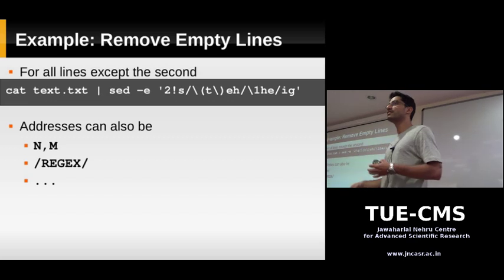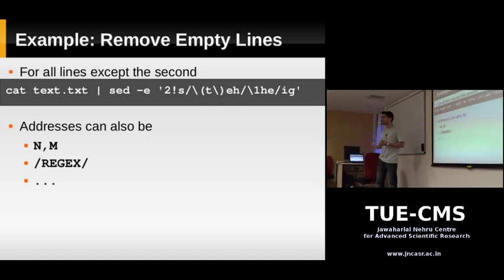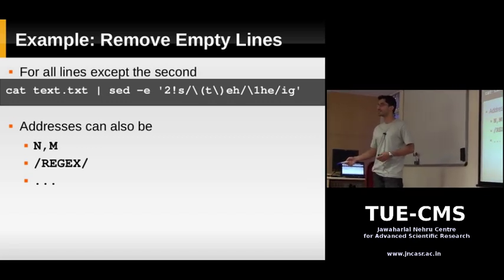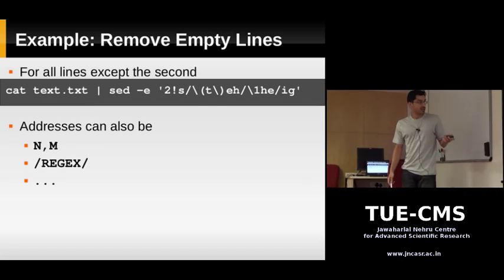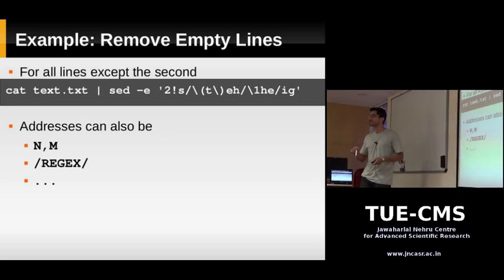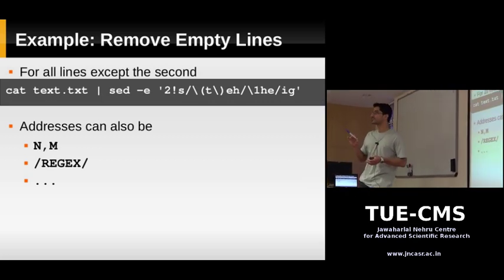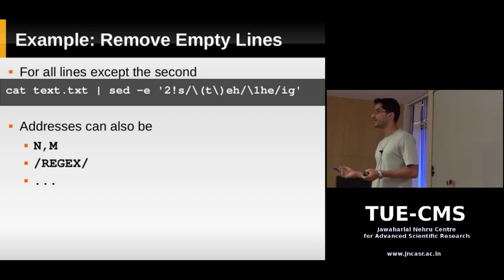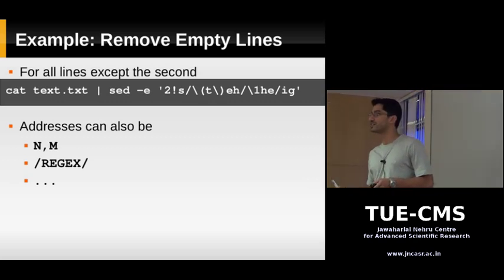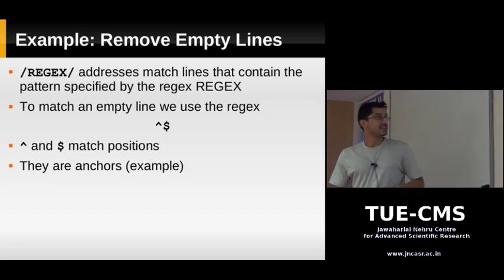Remember the sed cycle: it reads one line from input, performs the commands — whether substitution or deletion — and at the end of the cycle it prints out that line, then goes to the next line. If you put an address like this, it reads the line and checks if this regular expression matches. If you had a regular expression with just a plain word like 'the', it checks whether those characters are present. If it finds a match, the command is executed. You're going to use this to restrict the delete command so it only removes empty lines.